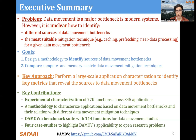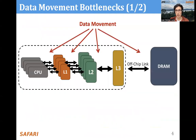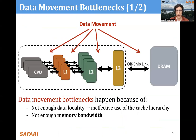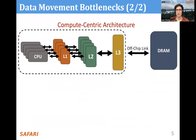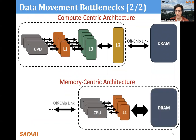This is open source work, and at the bottom of this slide you can find the link to the repository. In current computing systems, there is a lot of data movement through the whole memory hierarchy. These data movement bottlenecks happen because of not enough data locality, not enough memory bandwidth, or high average memory access time, and that happens mostly in compute-centric architectures.